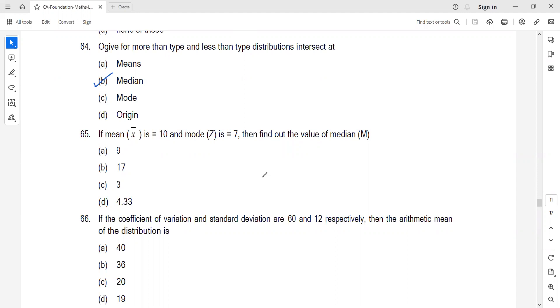We know very well that mean minus mode equals three times mean minus median. Mean is given as 10, mode is 7. So 10 minus 7 equals 3 into 10 minus median. This gives us 3 equals 3 times 10 minus median. The median is 9, option A.